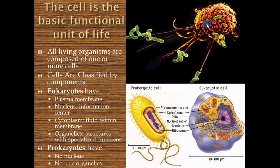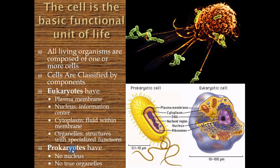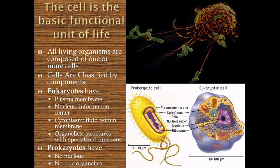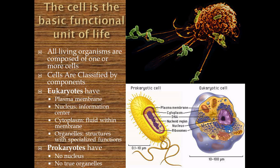Cells are classified by their components and features. Two major categories of cells are eukaryotes and prokaryotes. Eukaryotes have a distinguishing feature called the nucleus — the nucleus is a nut-like structure inside the cell. Prokaryotes don't have a nucleus; their DNA is arranged differently. For eukaryotes, we'll talk about the plasma membrane, the nucleus that stores the genetic code, the cytoplasm — cyto meaning cellular, plasm meaning a fluid-like substance with particles — and the specific organelles.